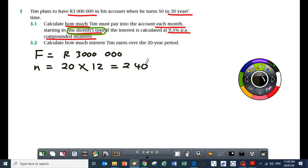Your i is 9.5% over 12, which is 0.095 over 12. Our X is unknown. The objective is for us to calculate how much money Tim is paying into the account every month, which in this case is X. X represents the equal amount which is paid every month.